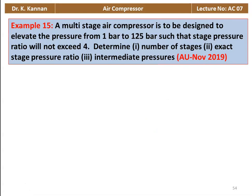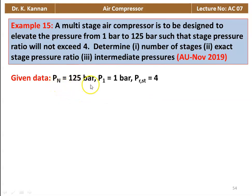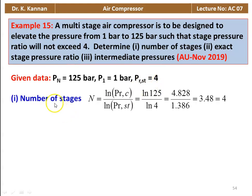Example number 15 from November 2019. A multi-stage air compressor is designed to elevate pressure from 1 bar to 125 bar such that the stage pressure ratio does not exceed 4. Determine the number of stages, exact stage pressure ratio, and intermediate pressures. Given: Pn = 125 bar, P1 = 1 bar, max pressure ratio per stage = 4. Number of stages = log(125) / log(4) = 4.828 / 1.386 = 3.48, rounded up to 4 stages.